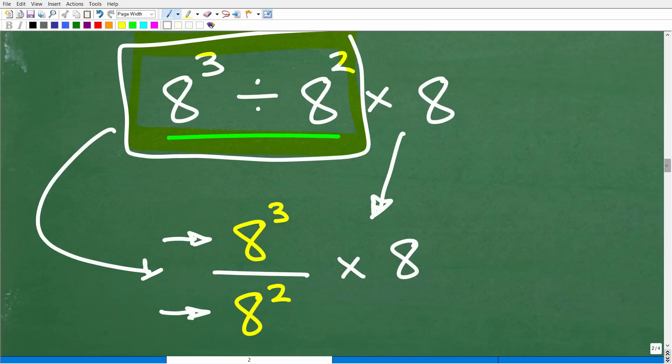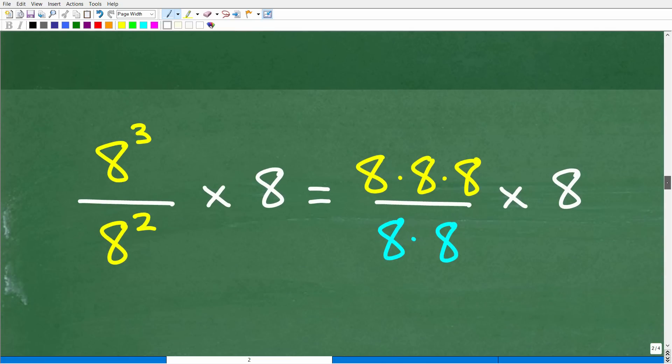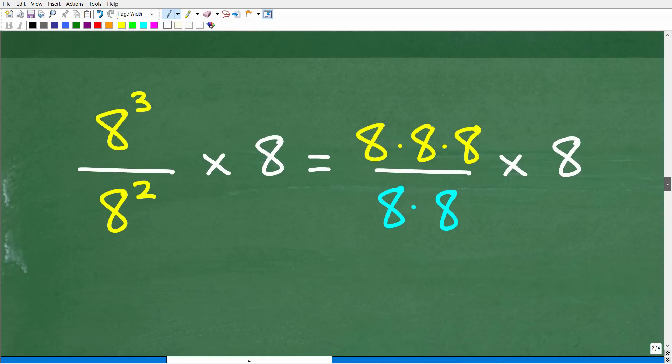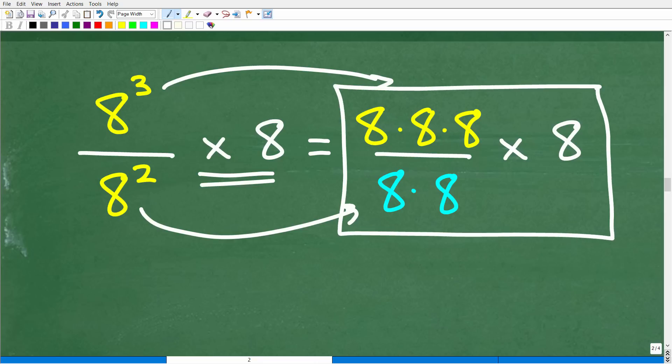All right, so this is going to make our life much easier because now what we can do is simply factor 8 cubed. So 8 cubed is the same thing as 8 times 8 times 8. 8 squared is the same thing as 8 times 8. Of course, this is being multiplied by 8. All right, so here is the problem that I'm going to be doing in just one second. And really, we're pretty much done. Again, we're doing this without a calculator. But let's take the next step, which of course is having you quickly subscribe to my YouTube channel.